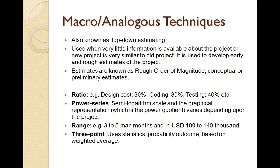The power series technique uses a semi-logarithmic scale and graphical representation, with a power quotient that varies by project. Project-specific data is plotted and extrapolated to derive estimates. We also use range-based estimates — instead of a specific number, we provide a range, such as 3 to 5 man-months and a cost of $100,000 to $140,000. Three-point estimation uses statistical probability based on a weighted average, considering probability and weights attached to estimates to reduce estimation errors and produce more predictable estimates.